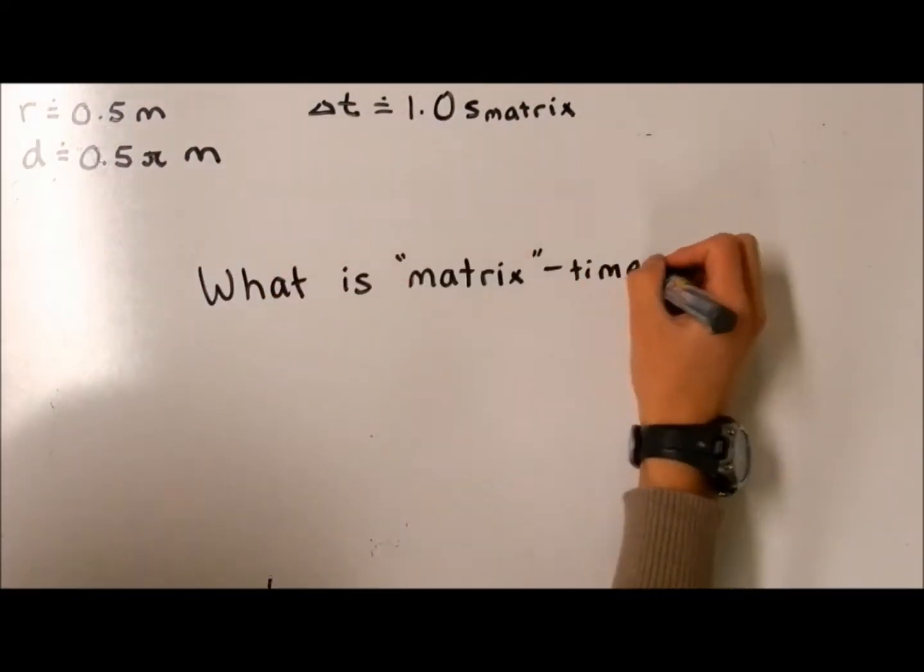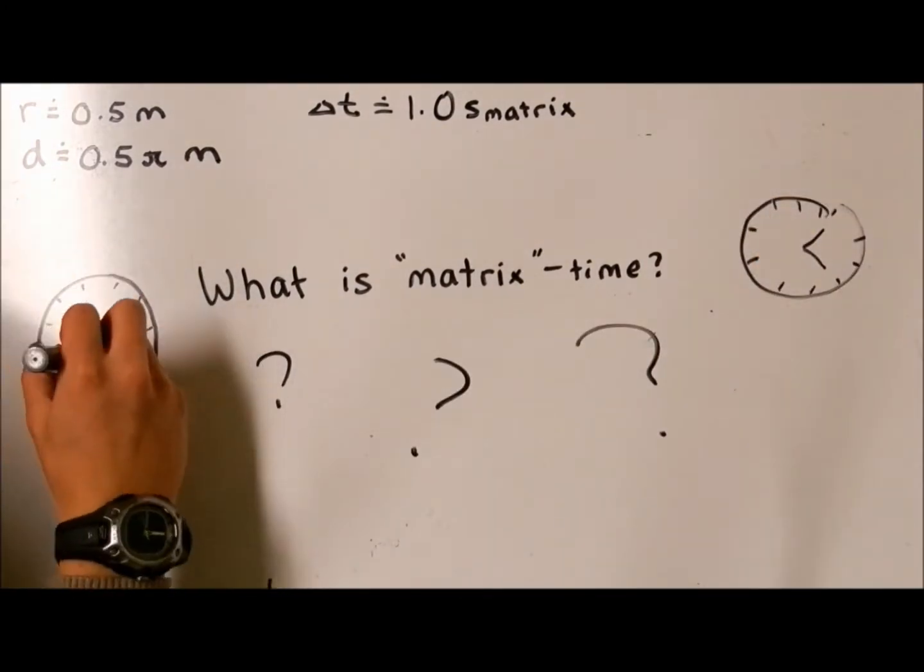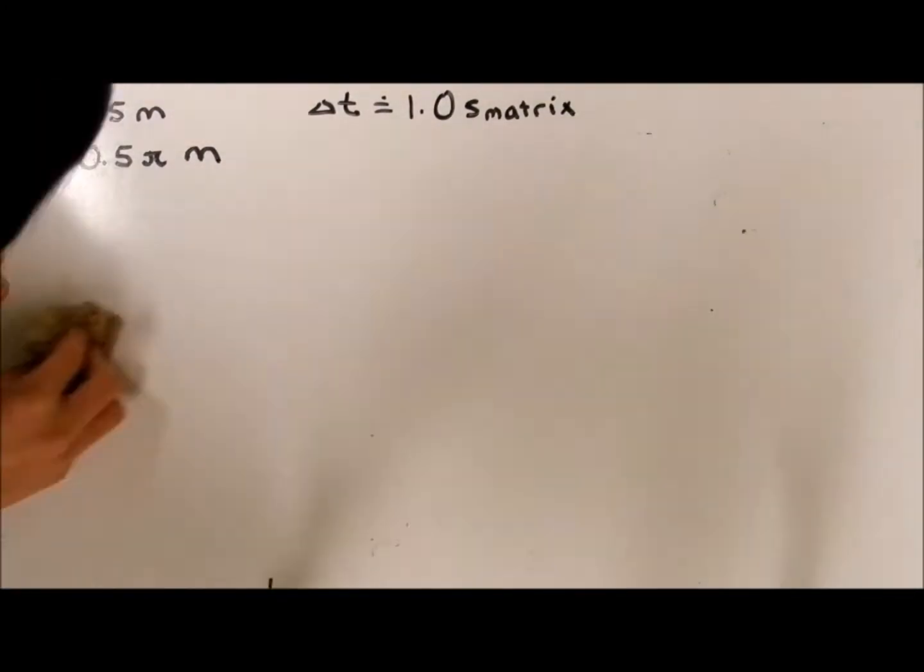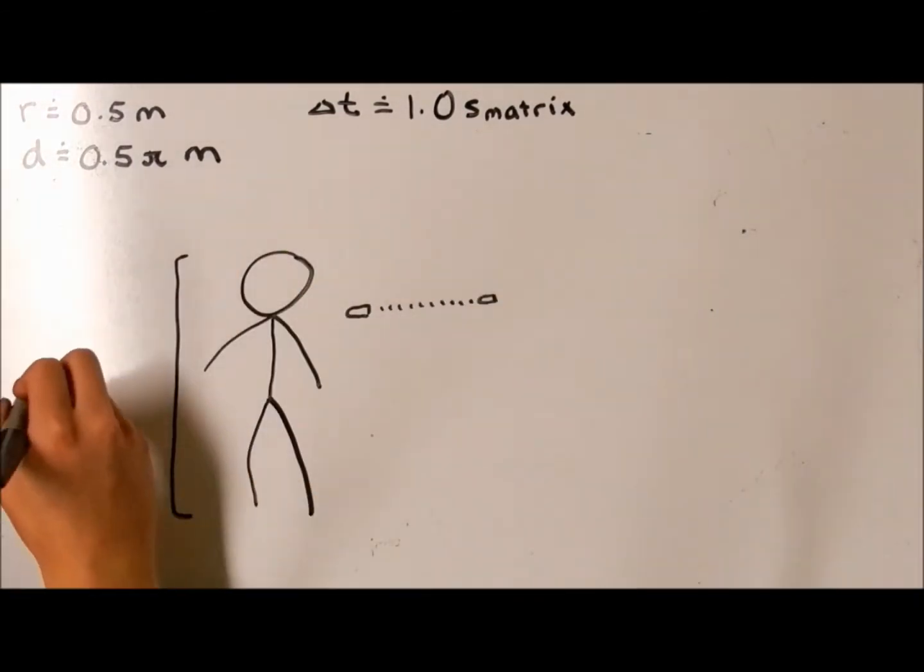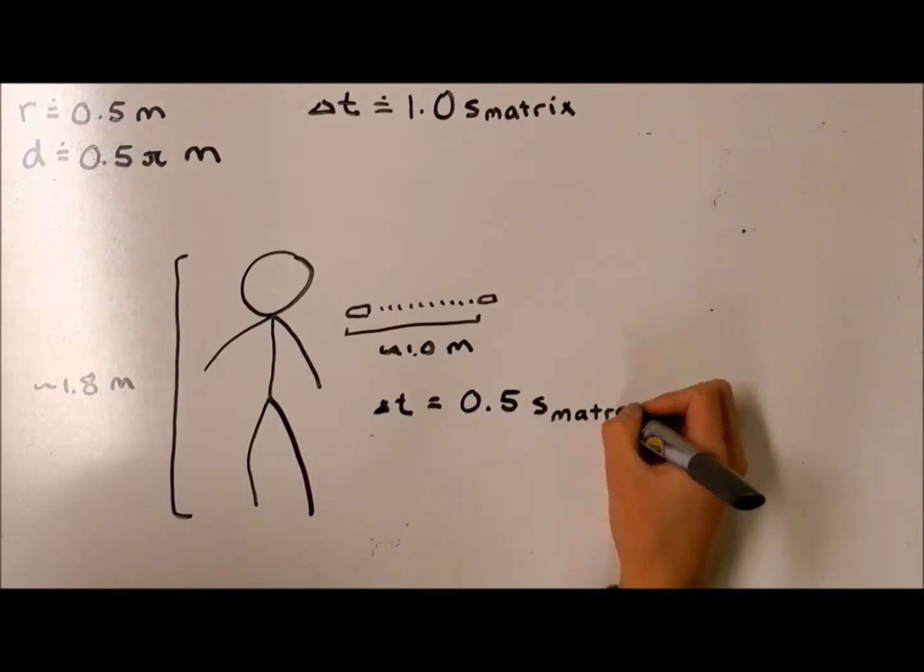But before we go any further, we need to figure out what is matrix time. In the clip, the bullet takes about half a second to travel a distance of 1 meter, giving us a speed of 2 meters per second.